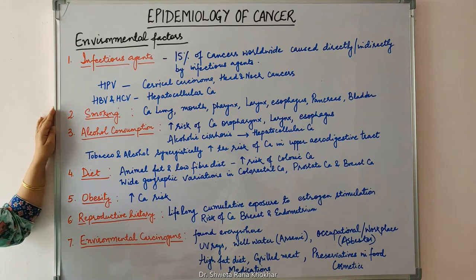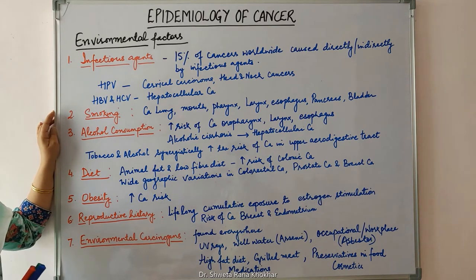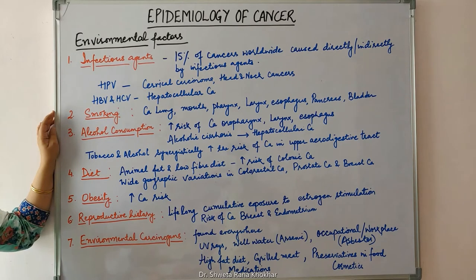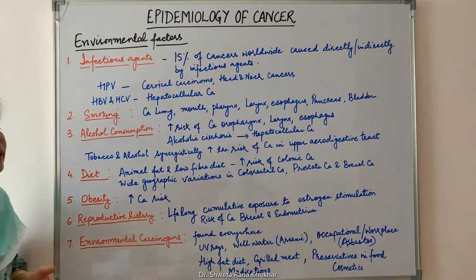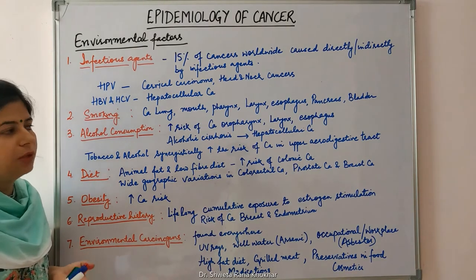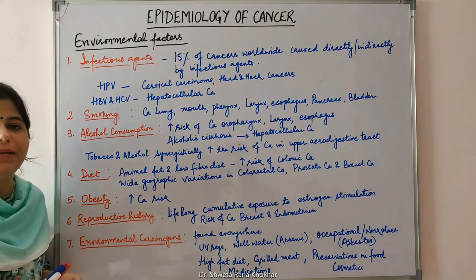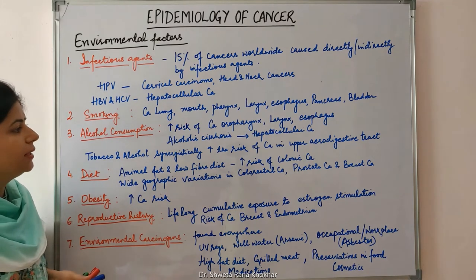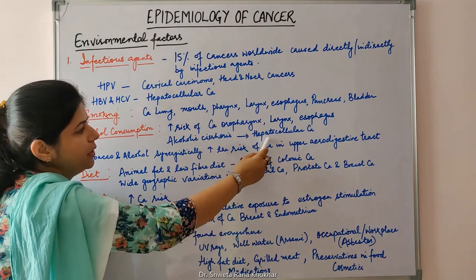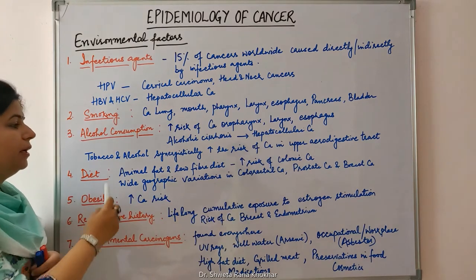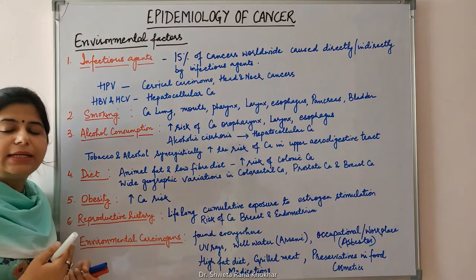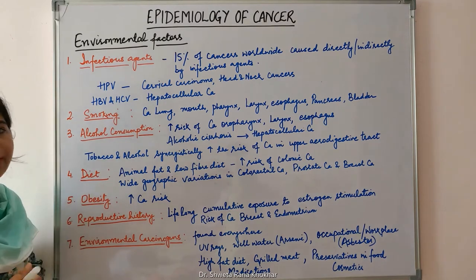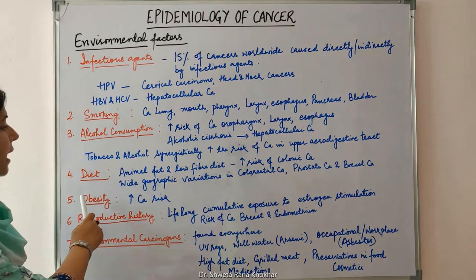Smoking plays an important role in causation of carcinoma of the lung, mouth, pharynx, larynx, esophagus, pancreas, and bladder. Alcohol consumption increases the risk of carcinoma of the oropharynx, larynx, esophagus, and by causing alcoholic cirrhosis it also increases the risk of hepatocellular carcinoma. Tobacco and alcohol use synergistically increase the risk of carcinoma in the upper aerodigestive tract.